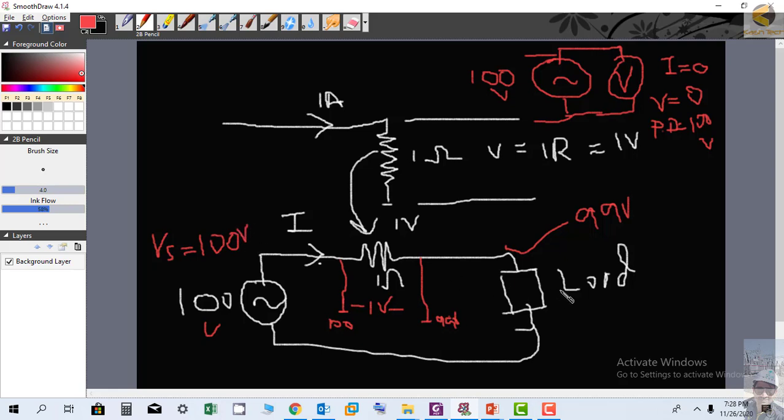The voltage which is appearing across the load is called load voltage. You can see here 99 volts is appearing, so 1 volt is dropping somewhere. The voltage appearing across the load is called load voltage, which in this case is equal to 99 volts. Keep this in mind.